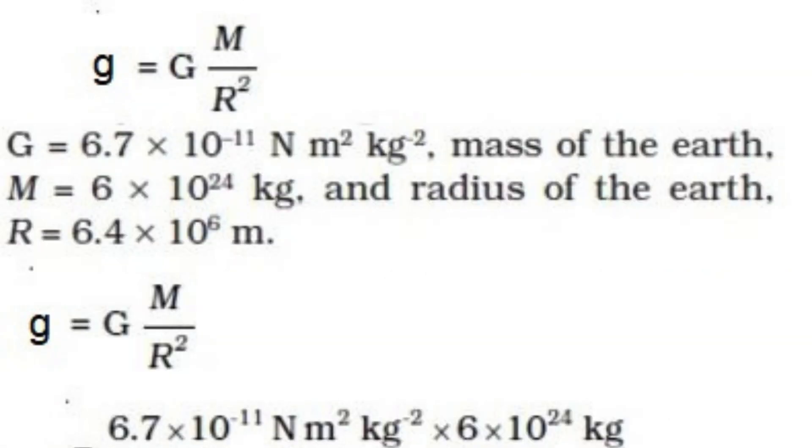If you need to calculate g for a different celestial body or at a different location on Earth, you can use the formula: small g is equal to capital G, multiplied by capital M, divided by R squared.